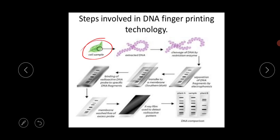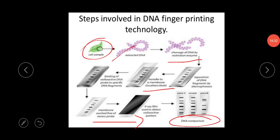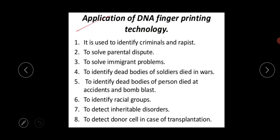Looking at the diagram: starting with a cell sample, you extract DNA using the Southern blotting technique. Then the DNA is cleaved and fragmented by the restriction endonuclease. DNA fragments are then separated by gel electrophoresis. Next, they are transferred to the membrane. Then radioactive DNA probes bind to specific DNA fragments. The membrane is analyzed using X-ray crystallography, and you get the comparison of the DNA pattern with the existing pattern.